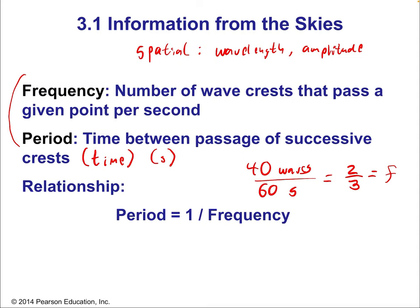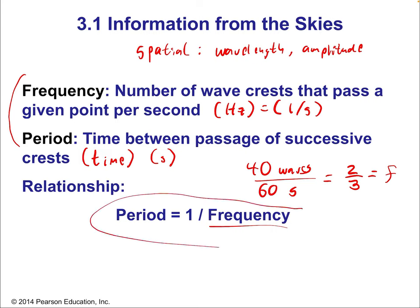The number of wave crests per second is called the Hertz rate — Hz is the unit, and it represents the reciprocal of a second, so Hertz is just one over a second. That's how we measure frequency. The relationship between period and frequency is a reciprocal relationship: the period is equal to one over the frequency. So if you know the frequency of a wave, you know its period immediately.